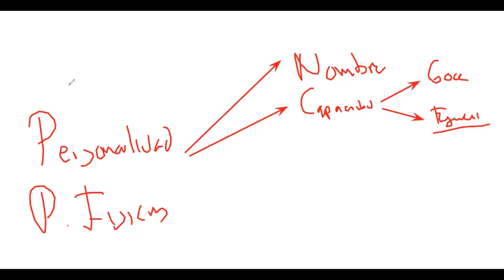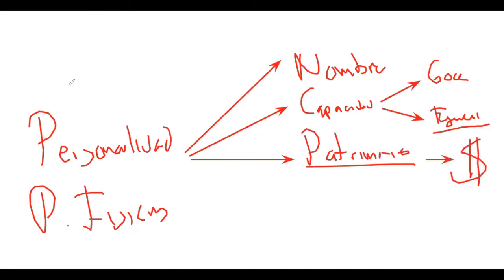Otro atributo de la personalidad sería el patrimonio: todo aquello susceptible de valoración económica. Todo el mundo tiene un patrimonio. Dicen los clásicos, y dice una canción de Pedro Infante: 'Si nací bien encuerado, nada tuve como herencia, lo que traigo ya es ganancia.' Todos tenemos un patrimonio, algunos más, algunos menos.